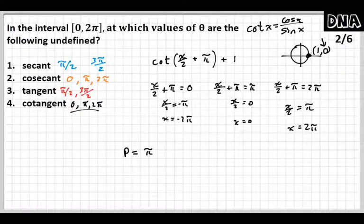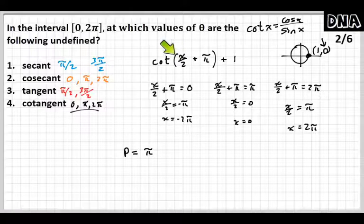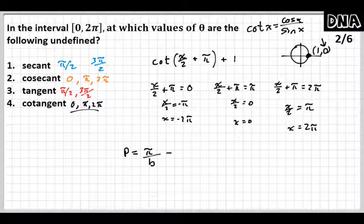So if my period equals π for a regular cotangent, what am I going to divide this π by to find the period for this cotangent? Whatever is multiplying to x. One half is multiplying to x. So I'm going to divide π by one half. So that would be 2π.